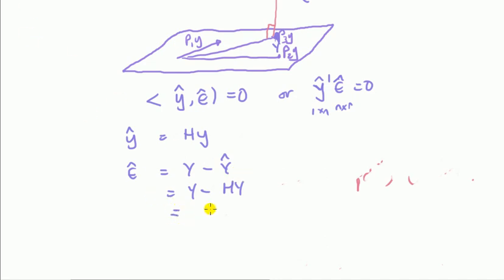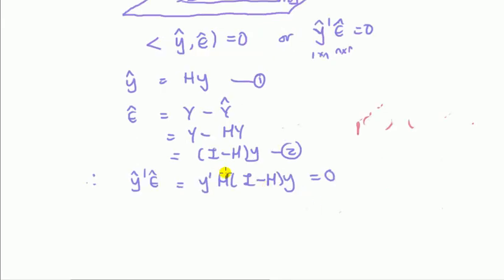So eta hat is going to be (I - H)y. Now taking one and two together and plugging it into here, we have this expression which is equal to zero if and only if you can see that H(I - H) is equal to zero, or that H transpose is equal to H transpose H.